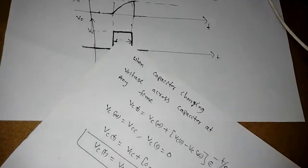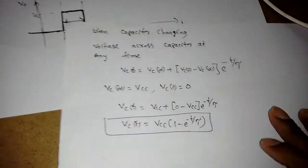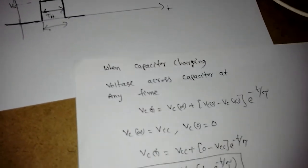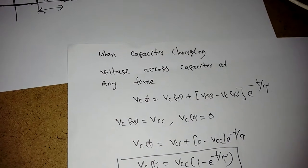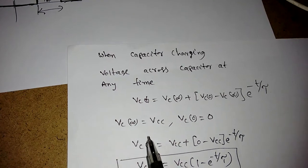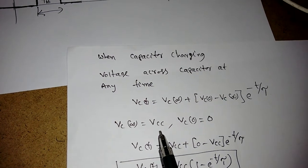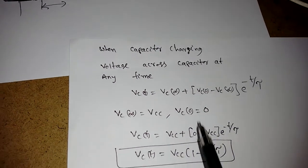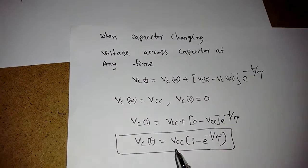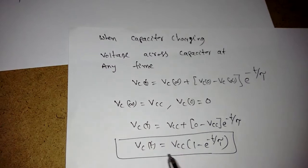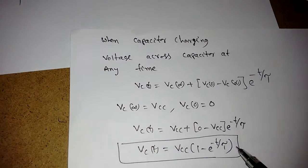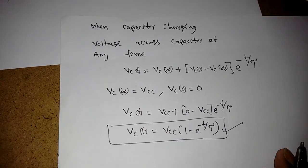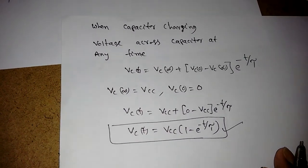So I take Vc(∞) = VCC and Vc(0) = 0. Substituting into the expression gives: Vc(t) = VCC · (1 - e^(-t/τ)).